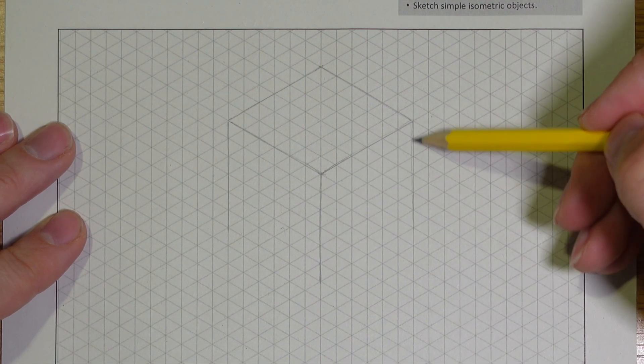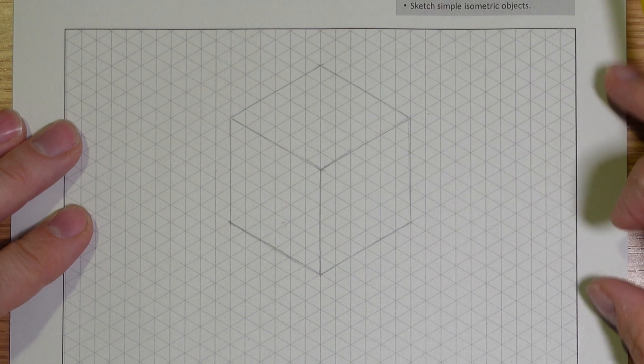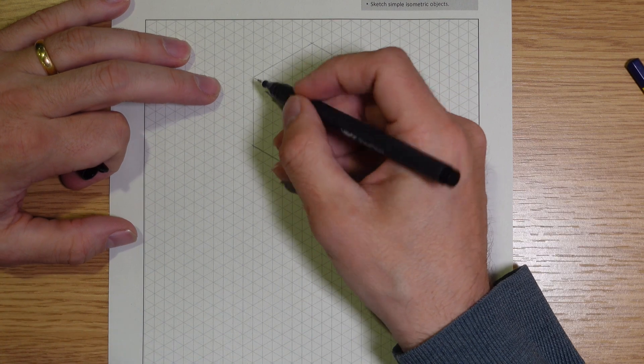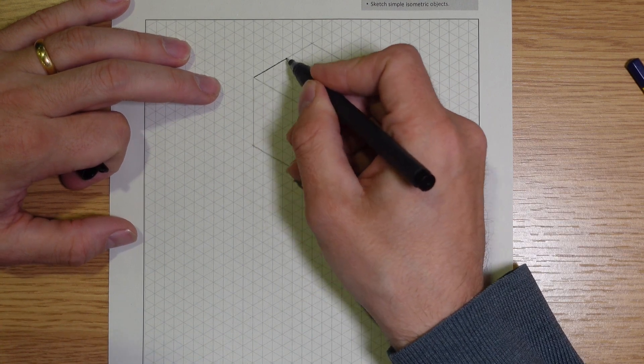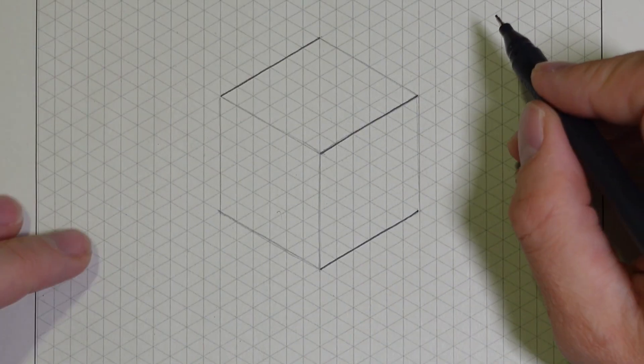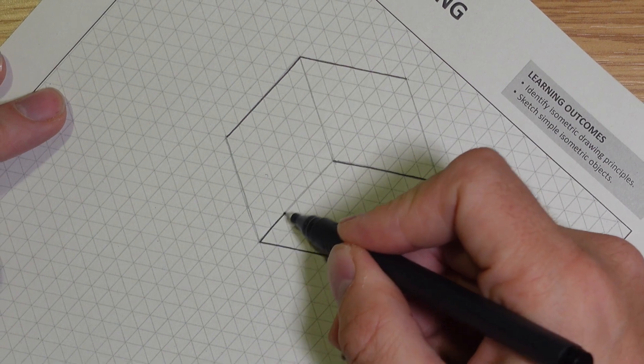There's no need to use a ruler at this stage because they're just a guide for now and it's far less time consuming to draw freehand. With the outline of the cube drawn I can now go over this with a fine line pen. Try doing this freehand if you can as this is a skill that can be developed the more you practice.